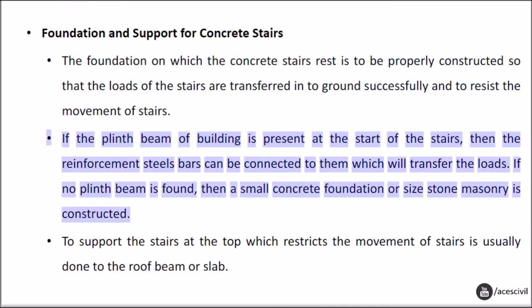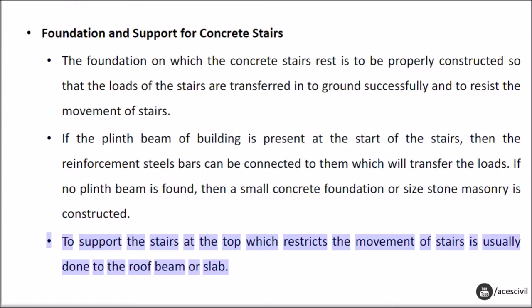If the plinth beam of the building is present at the start of the stairs, then the reinforcement steel bars can be connected to them, which will transfer the loads. If no plinth beam is found, then a small concrete foundation or size-stone masonry is constructed. To support the stairs at the top — which restricts the movement of stairs — connection is usually made to the roof beam or slab.